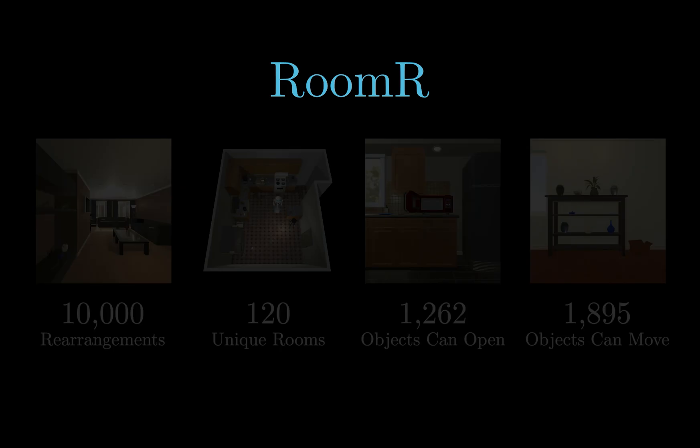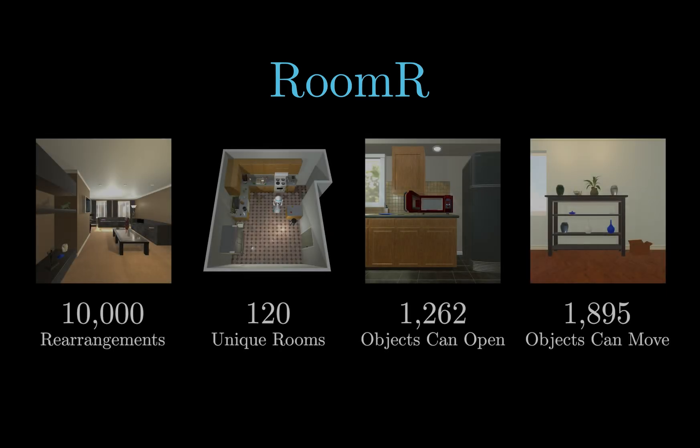To facilitate the task, we're releasing the REARR dataset. It uses AI2-THOR to generate 10,000 unique room rearrangements across 120 rooms, with over 1,200 object instances that may change in openness, and over 1,800 object instances that may change in position and rotation.